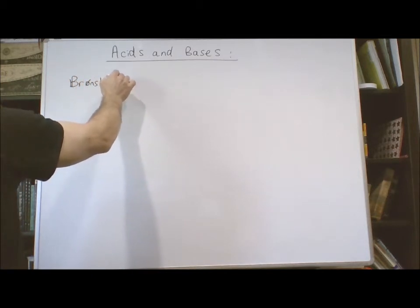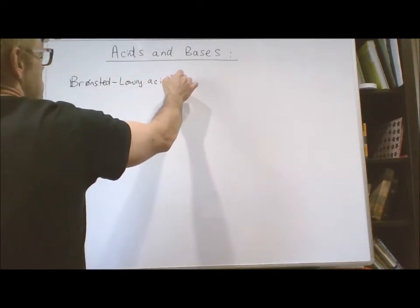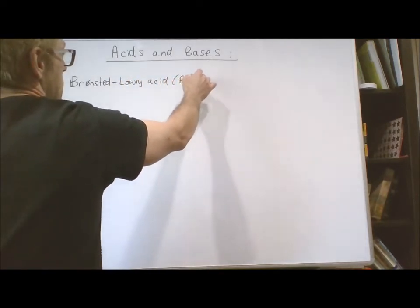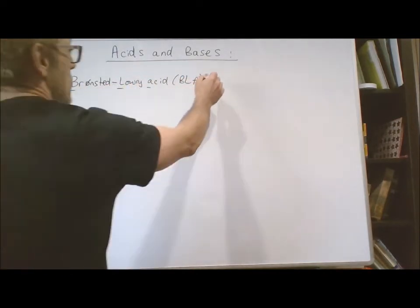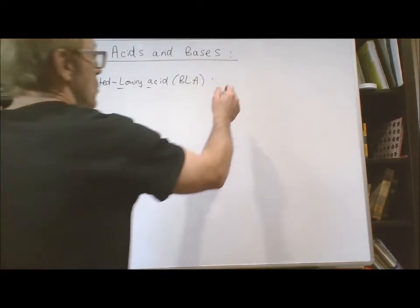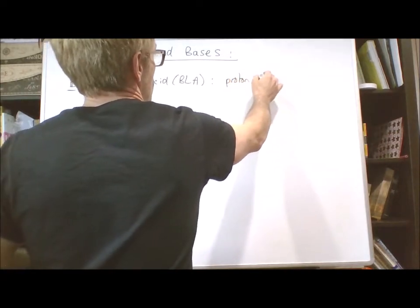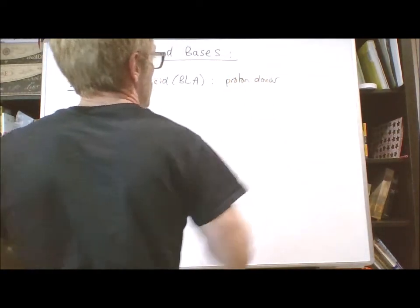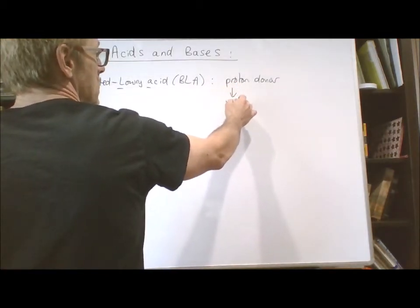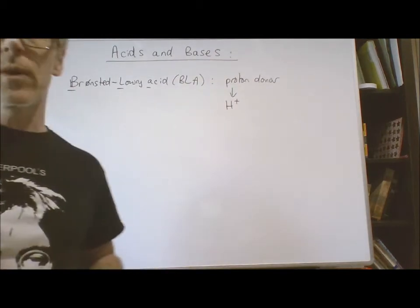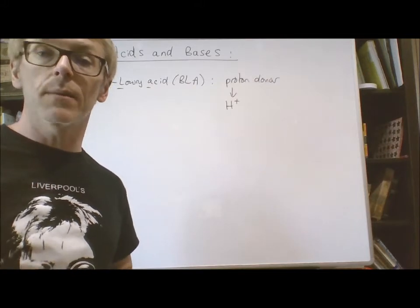A Brønsted-Lowry acid, which I'm going to abbreviate as BLA, is any chemical that donates a proton — so it's a proton donor. When I say a proton, I literally mean H⁺, which is just a hydrogen atom devoid of its electrons, so it's just a remaining proton.